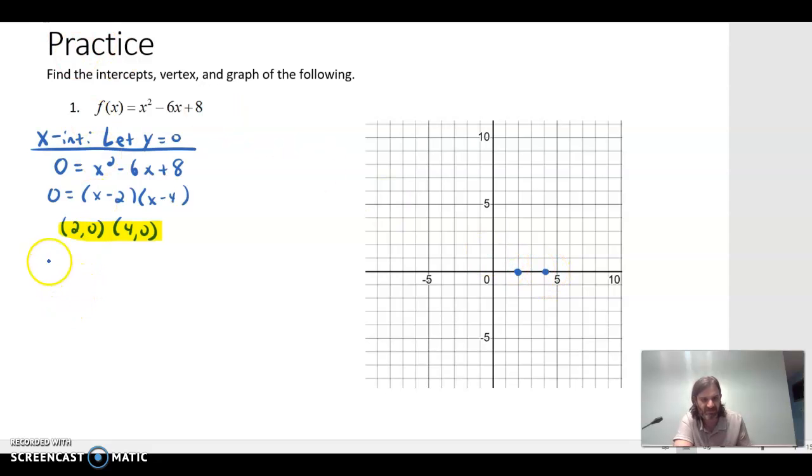And then we need to find some y intercepts. That is when we let x equals 0. So we're going to plug 0 in for x. So we'll get y equals 0 squared minus 6 times 0 plus 8. So we get 0, 8 as our y intercept. Let's mark that and put it on the graph.